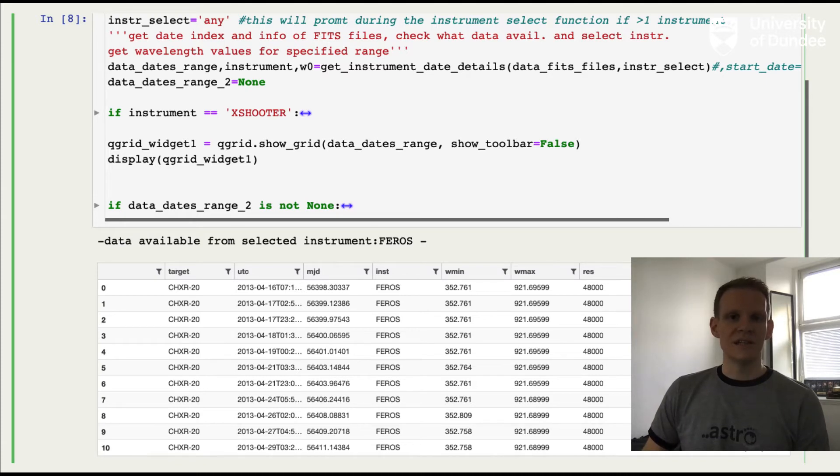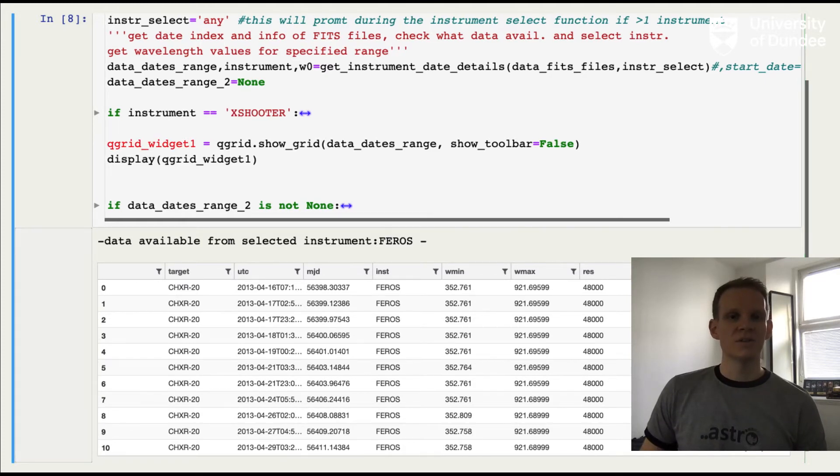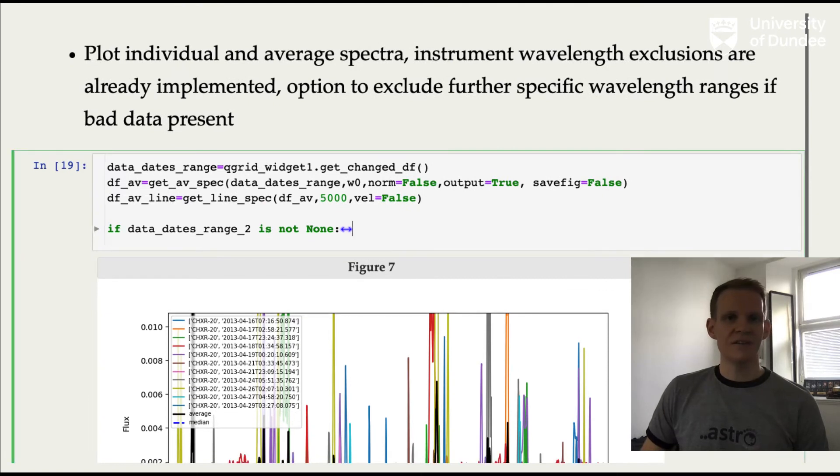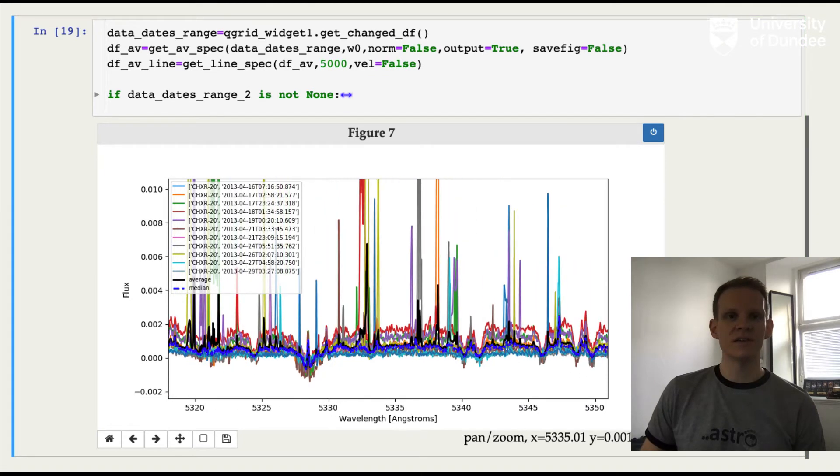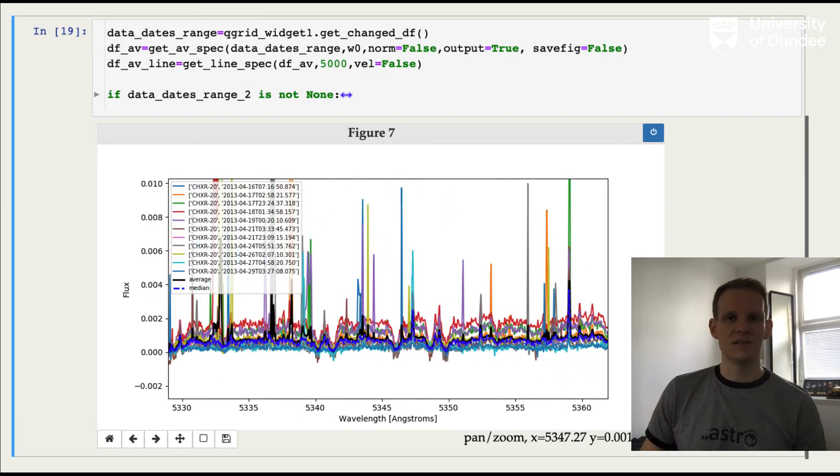We then have the option to select which spectroscopic instrument we want to analyze the data for. In this example, we just have data available from Pheros, but if there were more, you'd be able to select it here. StarMelt can read in the data from all of the ESO instruments using data from the ESO Science Archive. It also handles reduced FITS files from many other high-resolution instruments, such as ESPaDOnS or SOPHIE. Once StarMelt has read in all of the data, it uses pandas to construct a data frame of all of the spectral observations across your different dates, and determines the mean and median average spectra as well.